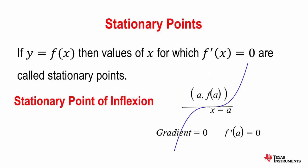However, we also have a stationary point of inflection which is not a turning point, but it's one where the gradient does not change sign. So the gradient is positive to the left of this point. The gradient is zero at the point, but the gradient is also positive to the right of the point. So this is a stationary point of inflection.